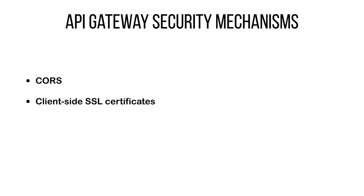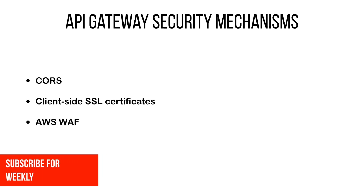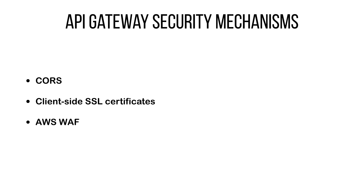Client-side SSL certificates won't have a dedicated example, but if you're interested in certificates and related topics, let me know in the comments below. The same goes for AWS WAF — a kind of firewall that will protect your API Gateway from common web exploits. I can make a separate video on it if you're interested, but it's not in scope for this season.